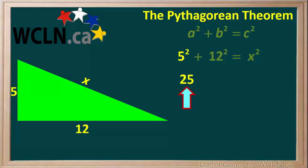5 squared is equal to 25, and 12 squared is equal to 144. So x squared is equal to 25 plus 144. 25 plus 144 is equal to 169, so x squared is equal to 169.